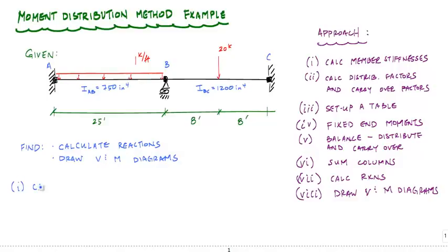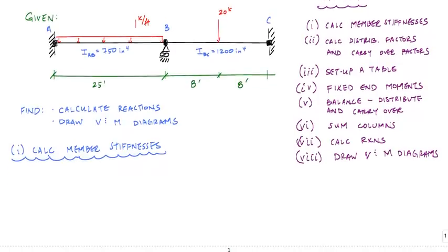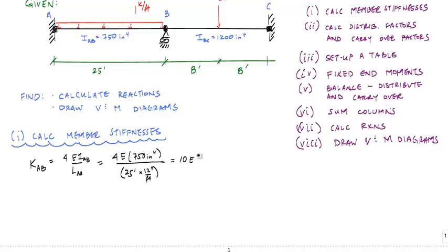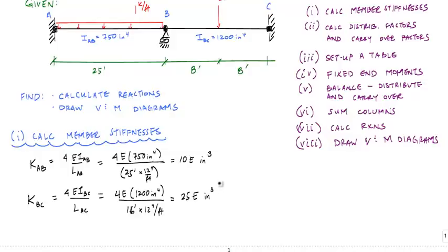The first thing is to calculate member stiffnesses. I only have two members. Since I only have one free joint where my structure can rotate, I'm looking at stiffness from a moment applied at point B. The stiffness for member AB is 4EI over L, which is 4E times 750 in⁴ divided by 25 ft times 12 in/ft, giving 10E in³. KBC similarly, with the far end fixed, is 25E in³.